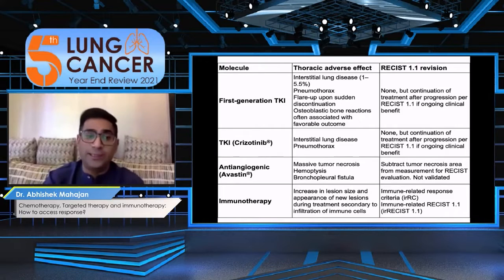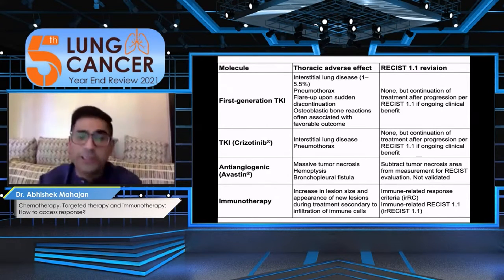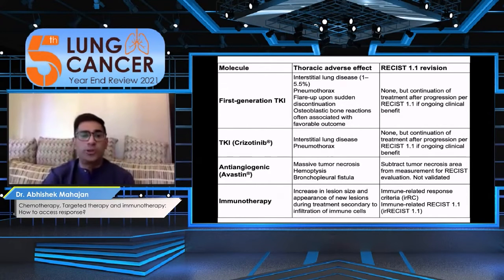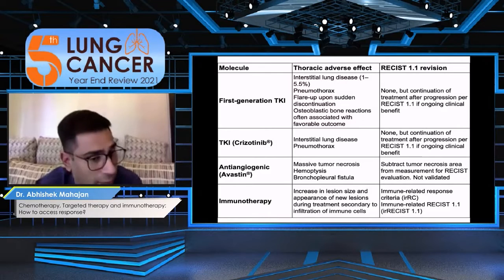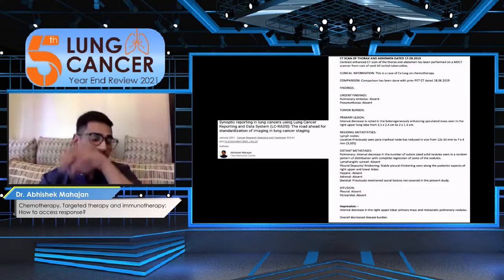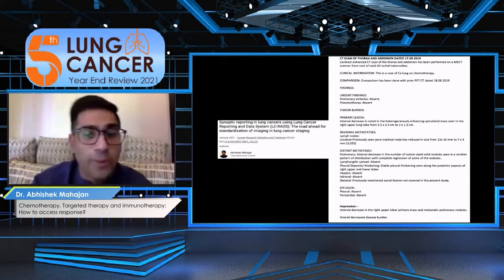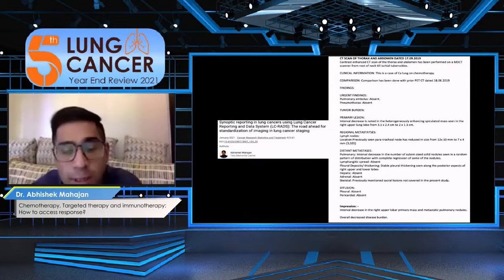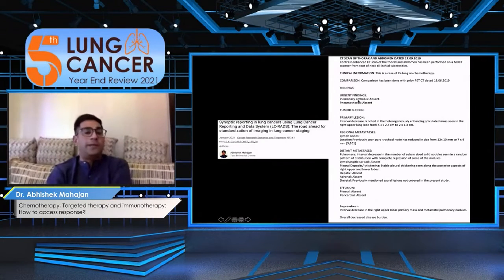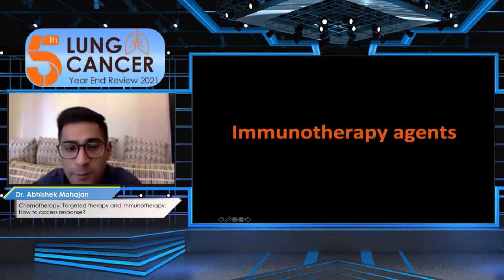These molecular agents — first generation, second generation and anti-angiogenic therapies — come with a lot of side effects including interstitial lung disease, pneumothorax, and especially with Bevacizumab you can see bronchopleural fistula, massive hemothorax and tumor necrosis. In the follow-up, apply the synoptic guideline and document any urgent findings such as pulmonary embolus or pneumothorax, and an overall impression of the response should always be given.